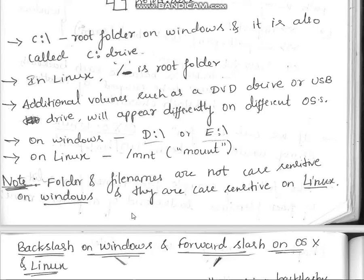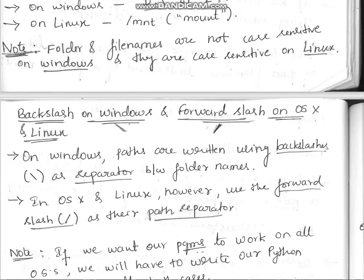On Windows, paths are written using backslashes as the separator between folder names. On OSX and Linux, the forward slash is used as the path separator.